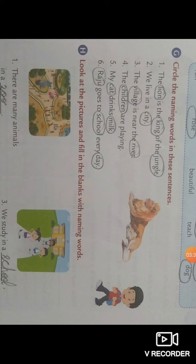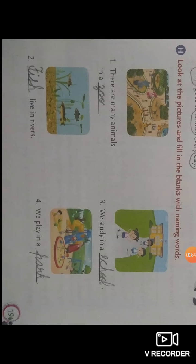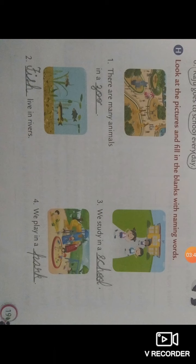Here lion, king, and jungle are nouns. We live in a city. City is a noun. Same way you have to do others also. Now move to H part. Look at the pictures and fill in the blanks with naming words.